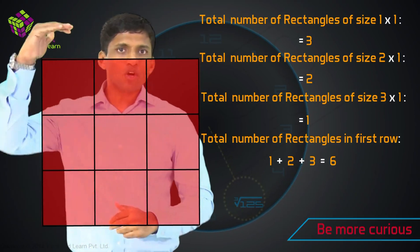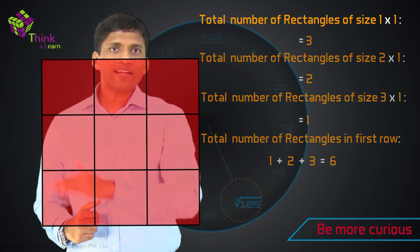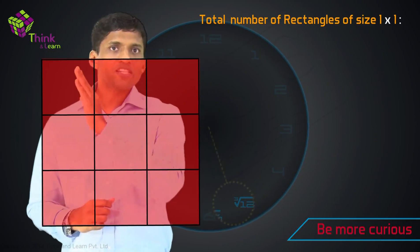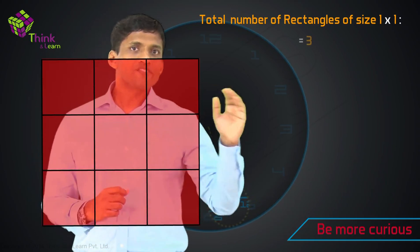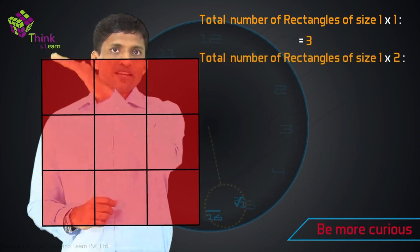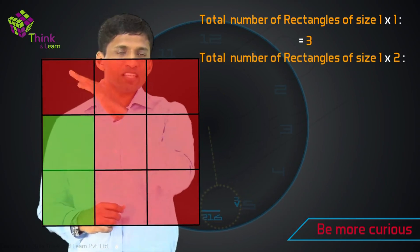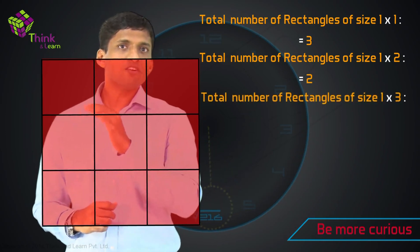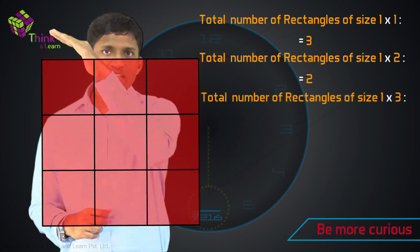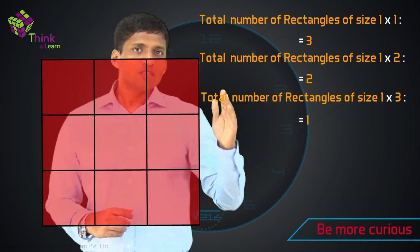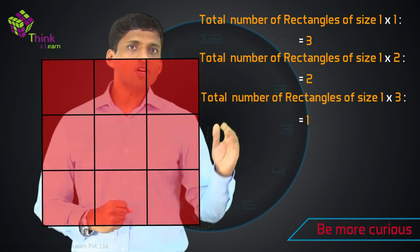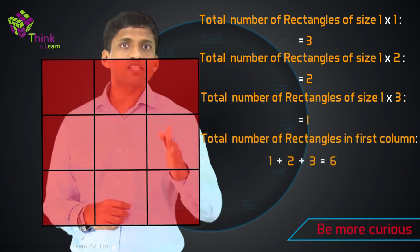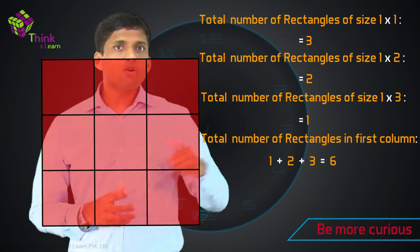Now take the first column — how many rectangles are there? Of size 1 by 1 it's 1, 2, 3. Of size 1 by 2 it's 1 and 2 — just see the areas getting highlighted, there are 2 of them. How many rectangles of size 1 by 3? It's the complete column, so that's 1. Along this first column also, the total number of rectangles is 1 plus 2 plus 3, equal to 6 — again a triangular number.